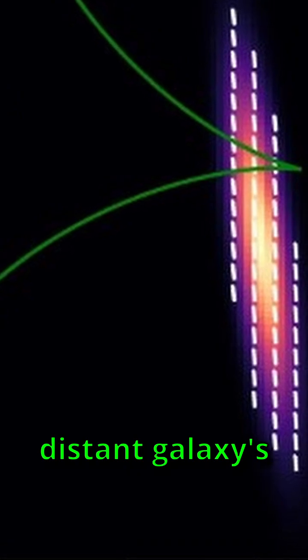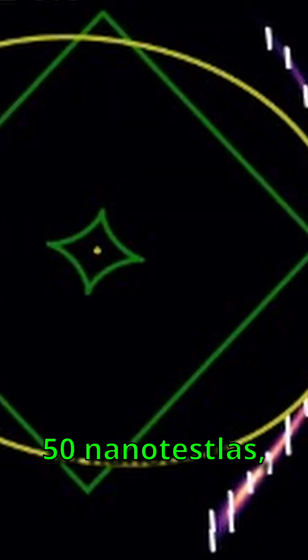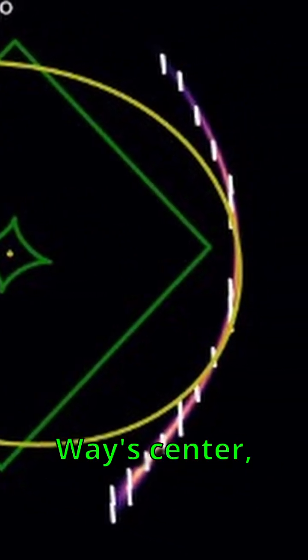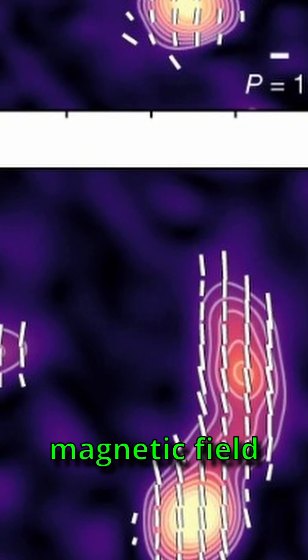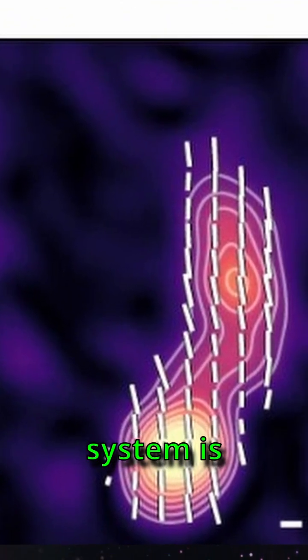The strength of the distant galaxy's magnetic field reaches as high as 50 nanoteslas, which is 50 times stronger than the field at the Milky Way's center, and 250 times stronger than the galactic magnetic field where our solar system is located.